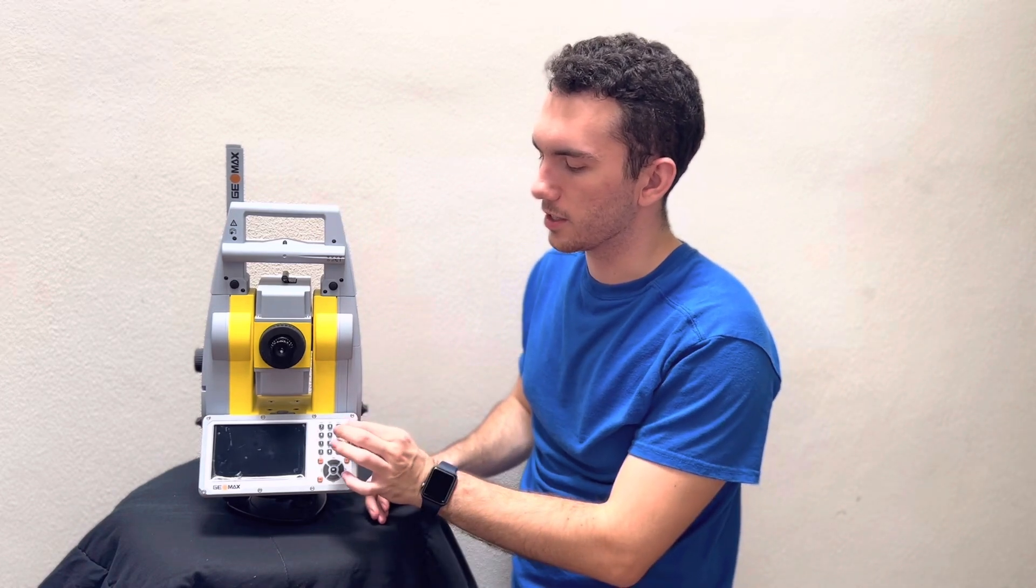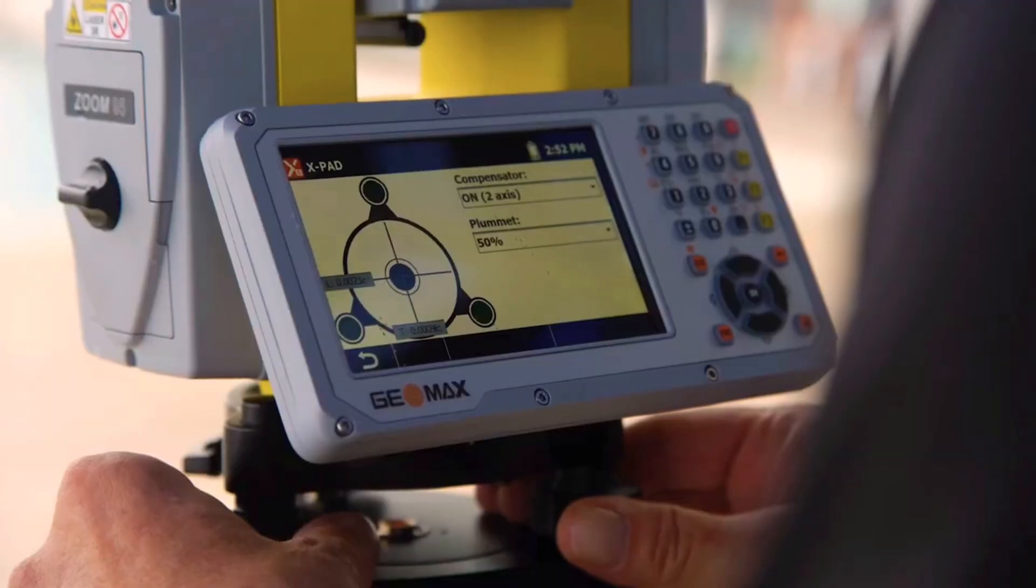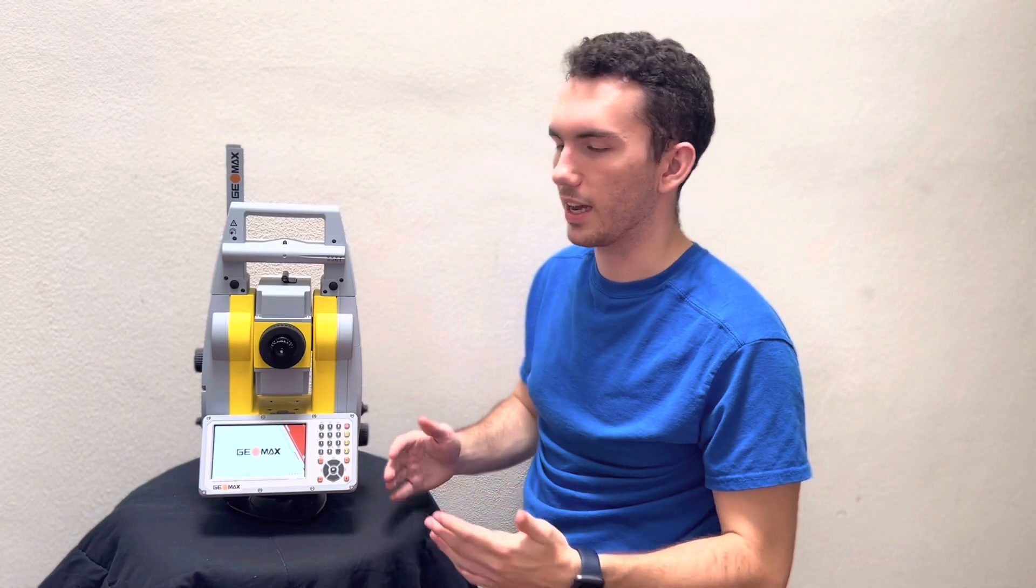The first thing you'll notice about it is this five-inch touchscreen display right here. It also has 25 keys to go along with it, meaning it's easy to use out in the field, making your job a lot easier.